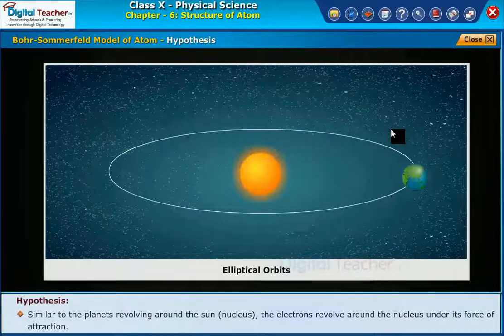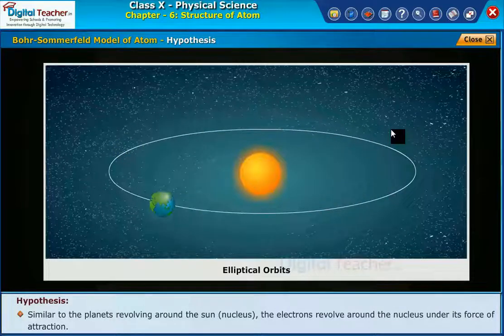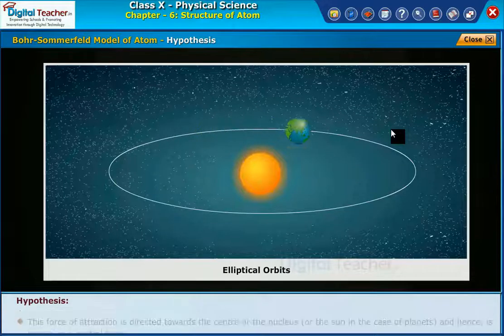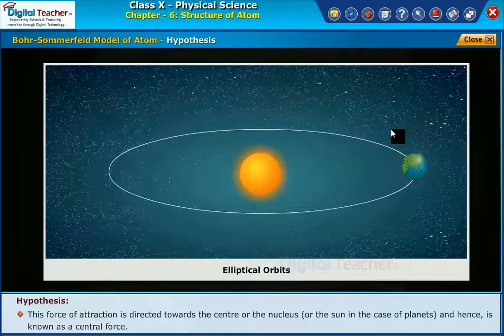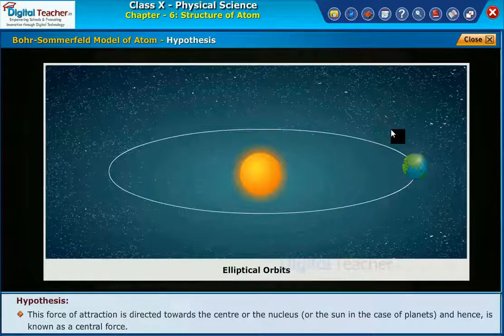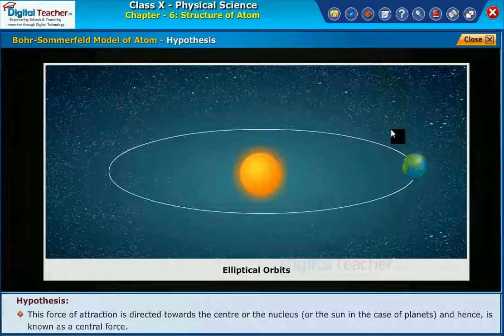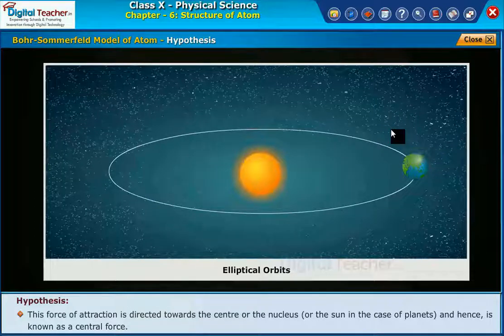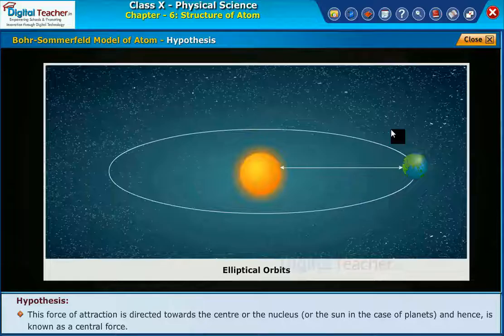The electrons revolve around the nucleus under its force of attraction. This force of attraction is directed towards the center, or the nucleus, or the sun in the case of planets, and hence is known as a central force.